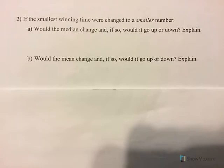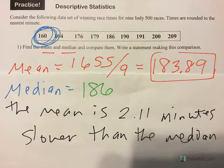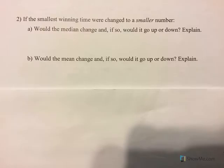Number two: if the smallest winning time were changed to a smaller number — let's go back to this real quick — what if this number, 160, were changed to be 140?